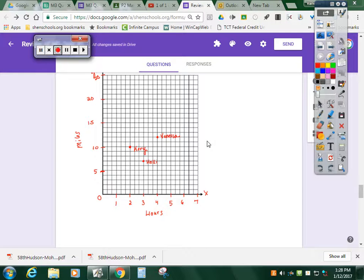Number 10 gives you three runners and asks you to say which statement is true about the three runners.